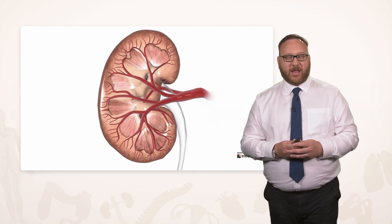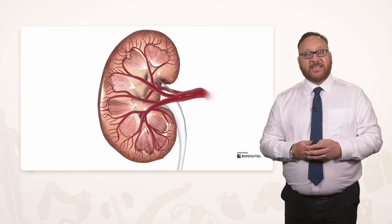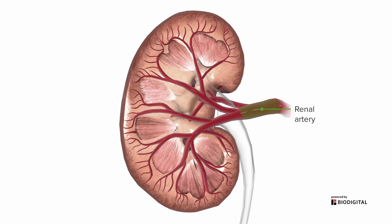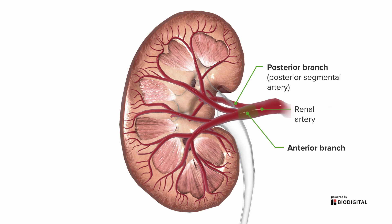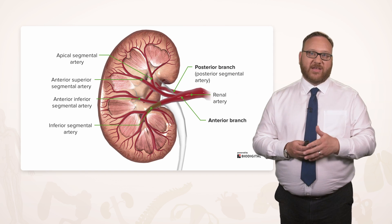Let's have a close-up look at the vascular supply to the kidney, which can be quite complicated. The renal artery gives a posterior branch going to the posterior segment of the kidney, and an anterior branch that bifurcates. It gives an apical segmental artery heading towards the apex of the renal pyramids, as well as anterior superior and inferior segmental arteries supplying those specific segments. The inferior segmental artery heads down to the inferior aspect of the kidney.